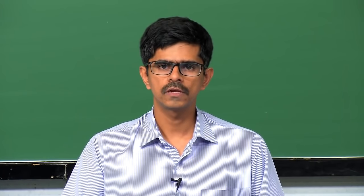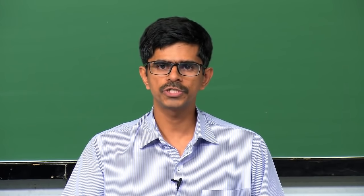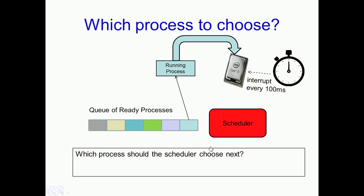Hello, in this lecture we will look at CPU scheduling algorithms. We had seen in operating systems that a scheduler would choose a particular process from the ready queue and that process is assigned to run in the processor. The question we are going to analyze is how the scheduler should choose the next process to run on the CPU from the existing queue of ready processes.